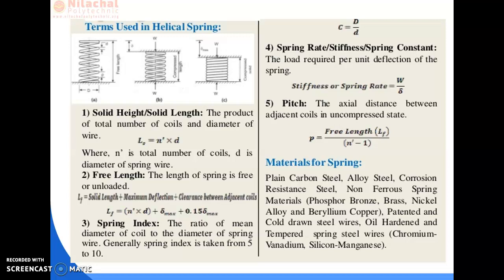A spring consists of a number of turns. First of all, we have to take a wire and that wire is turned into a helical or spiral shape, or in a flat shape. Before we make the helical spring, we have to see what material we are going to use. The materials used are plain carbon steel, alloy steel, corrosion resistance steel, non-ferrous spring, nickel alloys, cold-drawn steel wires, and oil-hardened and tempered spring steel wires. We can also use alloy steel.